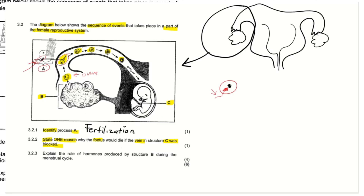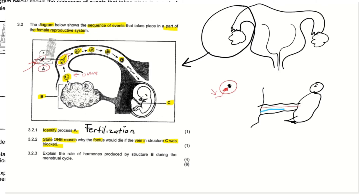They ask what would happen if the vein of structure C was blocked. In the umbilical cord — with the baby on one side and the mother on the other — the umbilical cord consists of two things: it has an umbilical artery as well as an umbilical vein. So now what would happen if the vein in the umbilical cord was to be blocked?